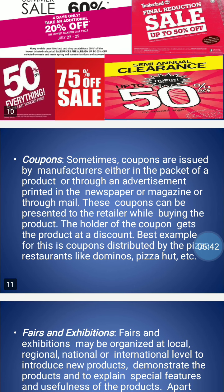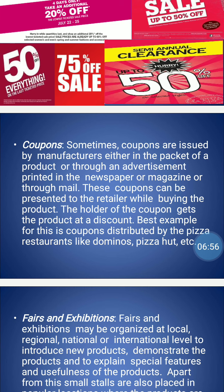Coupons are sometimes issued by the manufacturer either in the packet of a product, through an advertisement printed in a newspaper or magazine, or through the mail. These coupons can be presented to the retailer while buying the product, and the holder gets the product at a discount. Best examples are coupons distributed by pizza restaurants like Domino's and Pizza Hut. In short, a coupon is a certificate that declares some discount to the holder. The difference in payment is adjusted by the manufacturer.